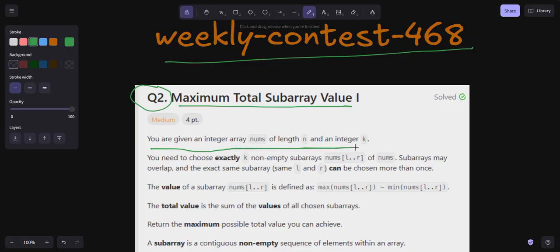You need to choose exactly k non-empty subarrays nums[l:r] of nums. Subarrays may overlap, and the exact same subarray (same l and r) can be chosen more than once. The value of a subarray nums[l:r]